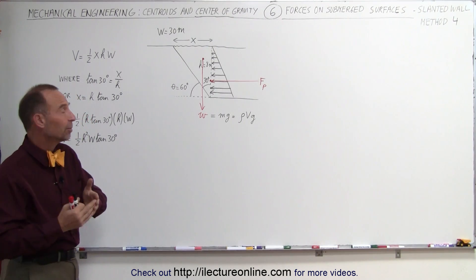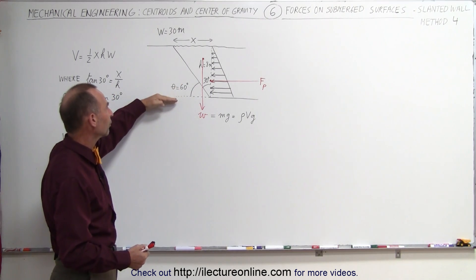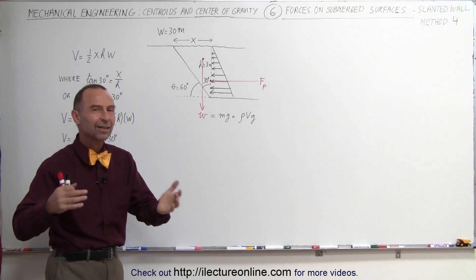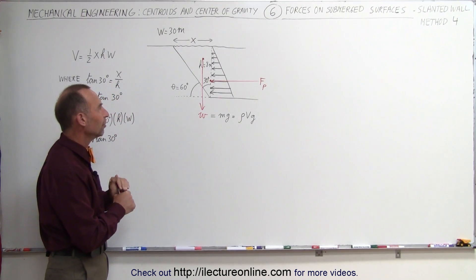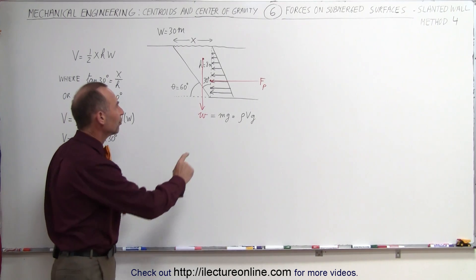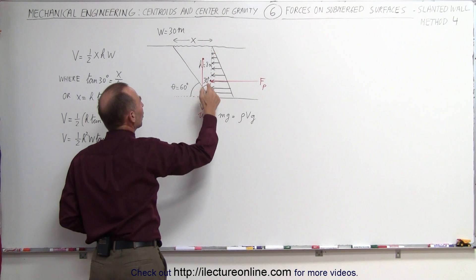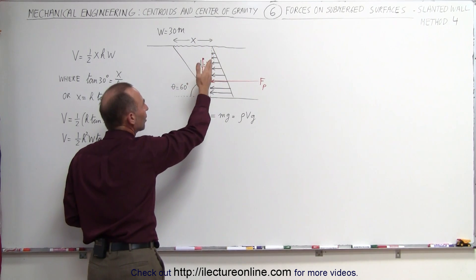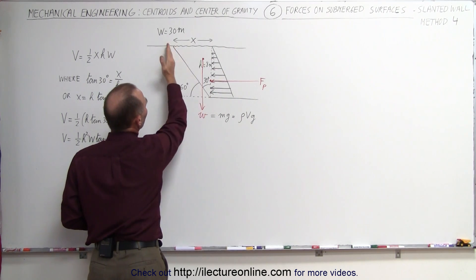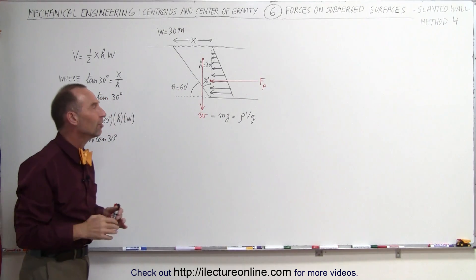In this case, just to make it simple again, we have a straight slanted portion, angle of 60 degrees relative to the horizontal, the depth of the water is 8 meters, the width of the dam is 30 meters — the exact same proportions as in the previous examples.